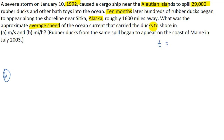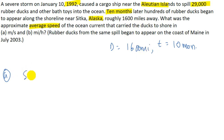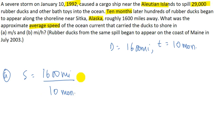The given data: time elapsed is 10 months and distance covered is 1600 miles. Average speed equals distance covered divided by time elapsed, so distance is 1600 miles and time is 10 months. We can convert the units — one mile equals 1609 meters.